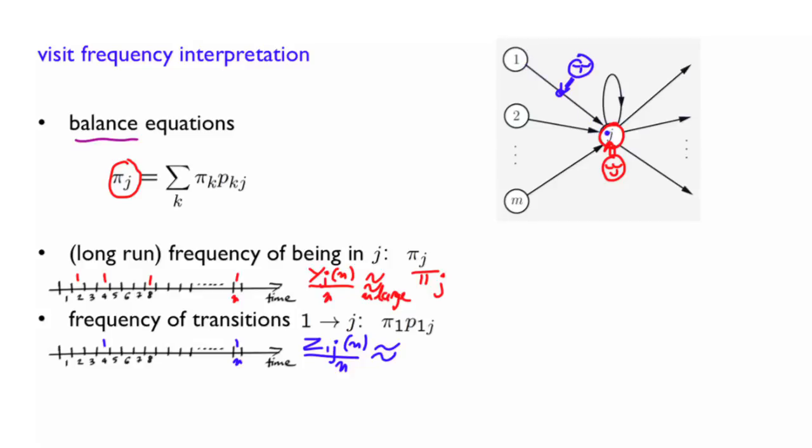So how often do we have such a transition? Well, a fraction pi 1 of the time, the particle is in state 1. And whenever at state 1, there is going to be a probability p1j of going there. There might be other ways to go. But out of all the time the particle in state 1, the frequency of time it will transition to j will be p1j. So out of all possible transitions that can happen, the fraction of these transitions that will happen from 1 to j will be pi 1 times p1j.